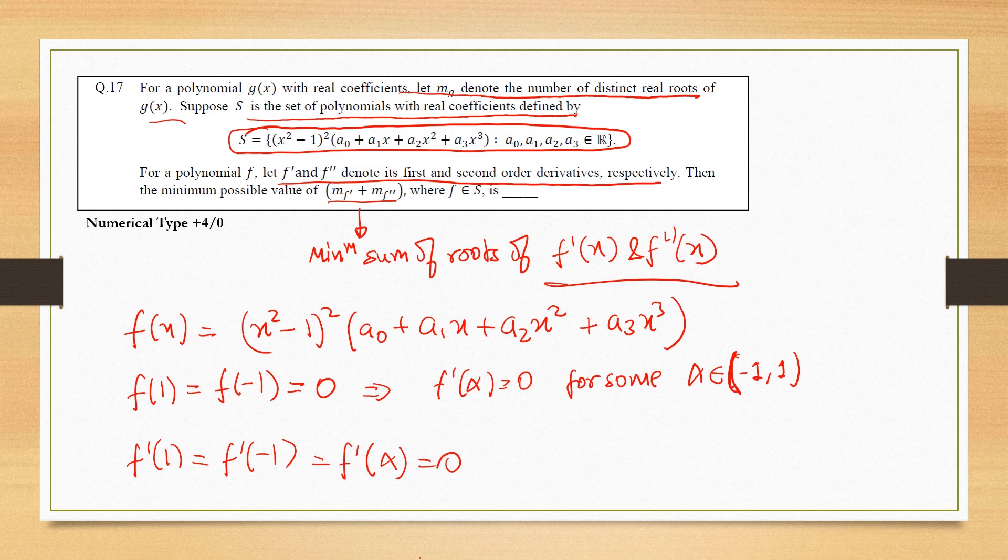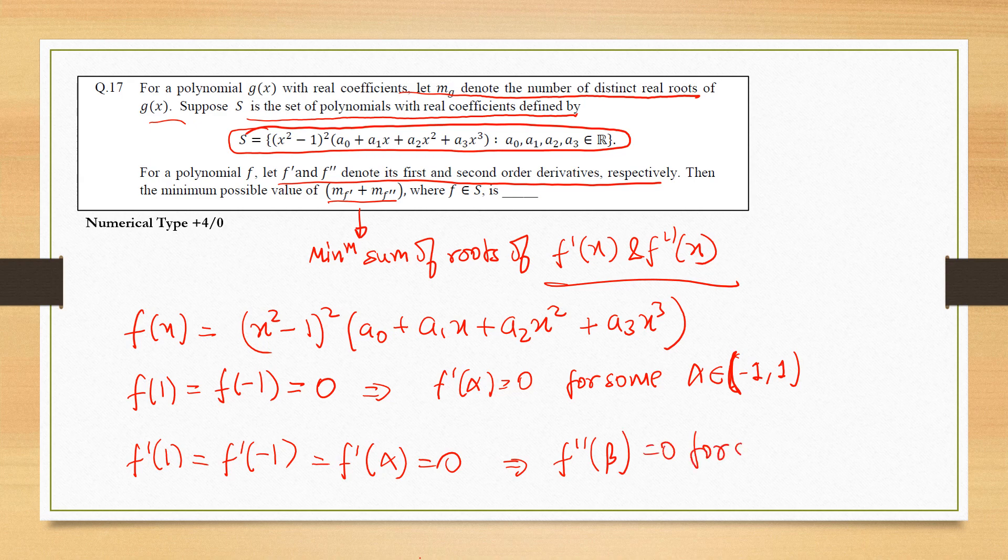Which implies f''(β) = 0 for some β₁ and β₂ belonging to (-1, 1). Again by Rolle's theorem.